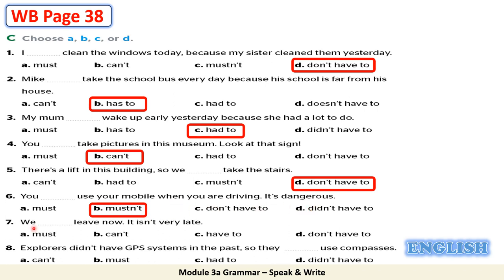Seven: we don't have to leave now — it isn't very late. Eight: explorers didn't have GPS systems in the past, so they had to use compasses. All your answers are correct.